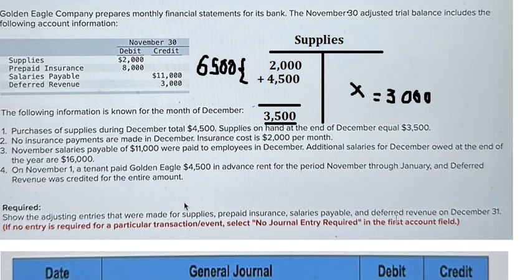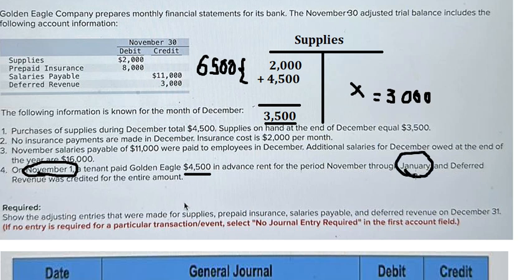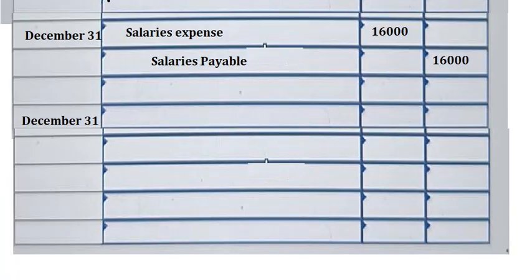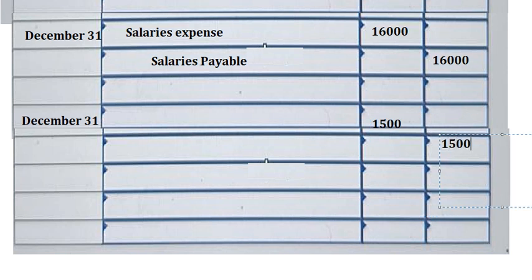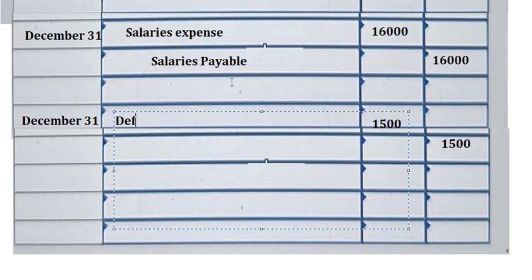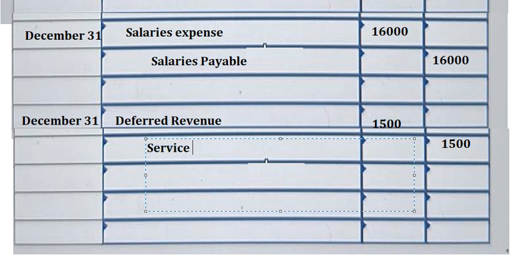The last one is about deferred revenue. We supplied the service for 4,500, but we started from November 1st, so that means from November to January — that is three months. We just have December, so we divide 4,500 by 3 and we get 1,500. So this should be deferred revenue and service revenue — 1,500.